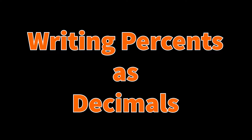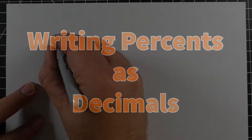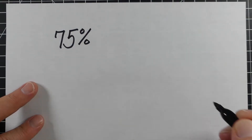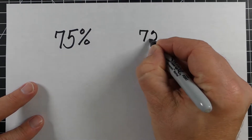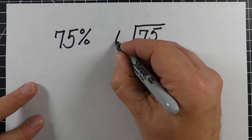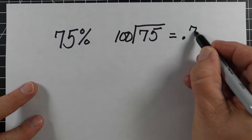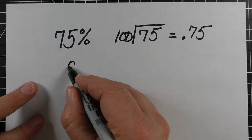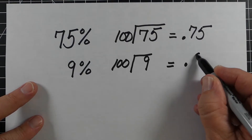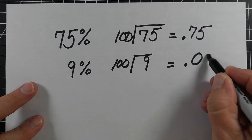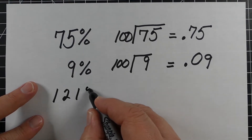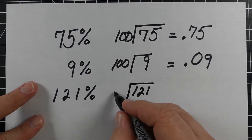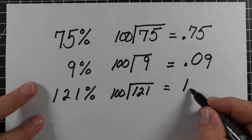Let's talk about taking percents and writing them as decimals. You can take a percent and divide it by 100 to get the decimal. So 75% divided by 100 is 0.75. For 9%, dividing by 100 gives 0.09. And 121% divided by 100 gives 1.21.